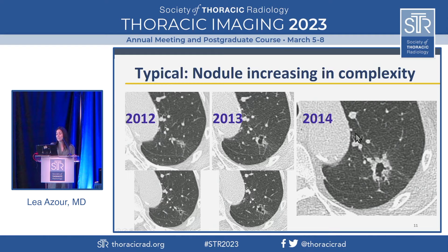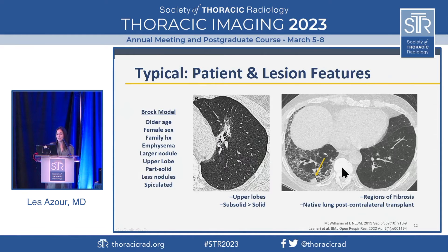And this is 2014 — look how much more terrible in only one year. This, again, is adenocarcinoma. So we have various models that tell us what we find to be a suspicious patient feature or a suspicious lesion feature.